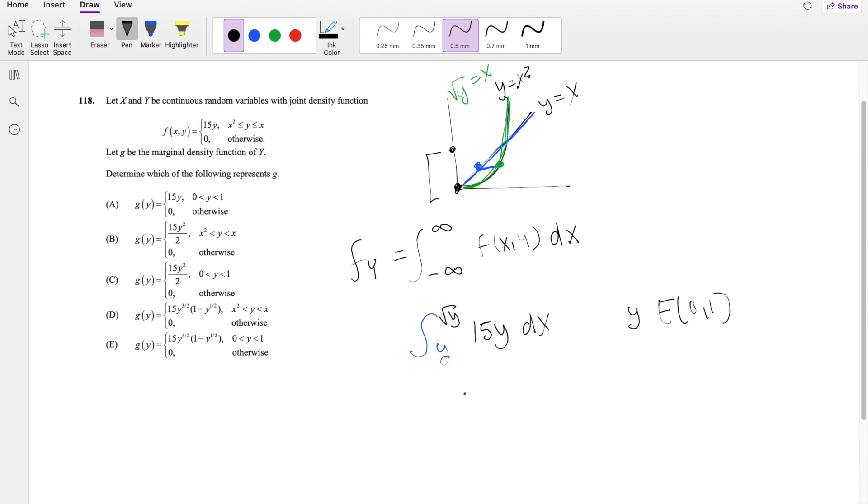So integrating, you get 15y times x, integrating the x from y to square root of y. So 15y is just a constant here. So you get square root of y minus y.